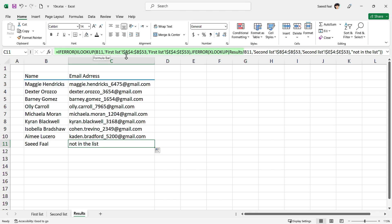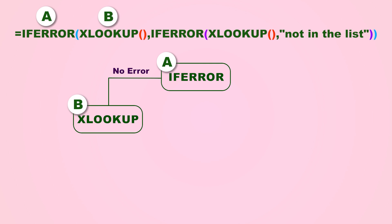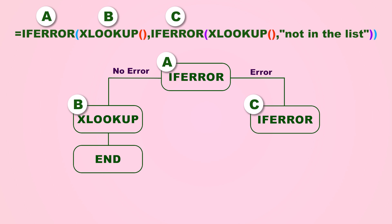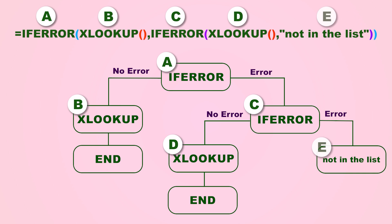Maybe this function was a little confusing for you. Let me explain step by step what really happened. In the formula, first we have the IFERROR function. If no error occurs, Excel calculates the first XLOOKUP and searches for the result in the first list and executes the function. But if Excel couldn't find any match in the first list, it means there is an error, so Excel starts the second IFERROR function. This time again, if no error occurs, Excel calculates the second XLOOKUP and searches for the result in the second list and executes the function. But if Excel couldn't find any match in the second list, the error happens again, and this time Excel shows the "not in the list" message and ends the function.